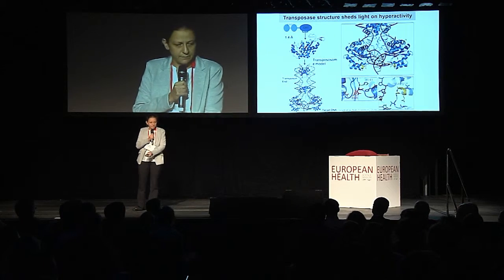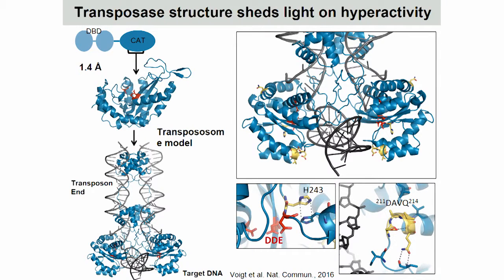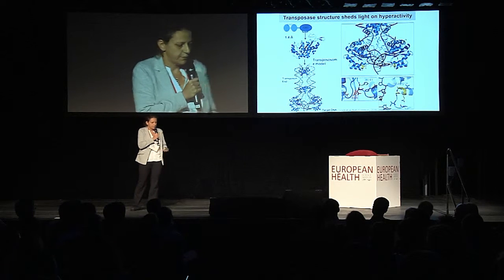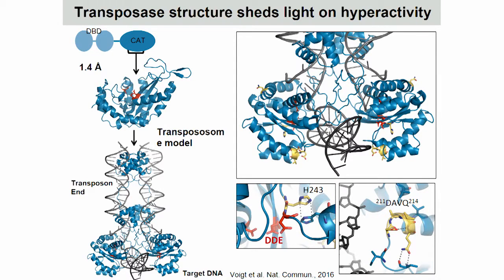Based on this structure, we were able to explain previously identified hyperactive mutations in the transposase. For example, what you see on the bottom left corner is the four amino acids that stabilize the target binding site for binding of the target DNA, thereby enhancing target affinity and greatly increasing integration efficiency of the transposon.